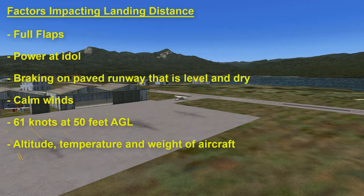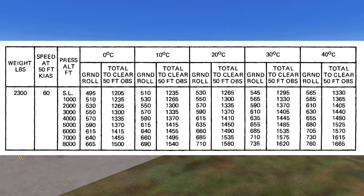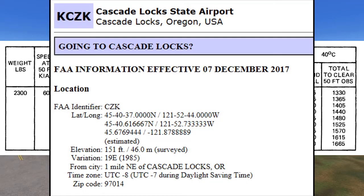Altitude, temperature, and weight of aircraft are other factors to consider. You will have to adjust the distance if any of these factors are different. We will say the weight of the aircraft is 2,300 pounds to match the chart and the winds are calm. The elevation of Cascade Locks Airport is 151 feet.